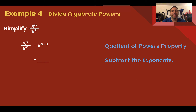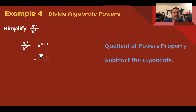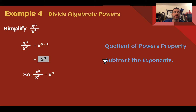Example 4: Divide algebraic powers. Simplify x to the eighth divided by x squared. Because we're dividing with the same base, we just need to subtract the exponents — that's our quotient of powers property. So 8 minus 2 gives us 6. x to the eighth power divided by x squared, same base, subtract the exponents — we get x to the sixth power.